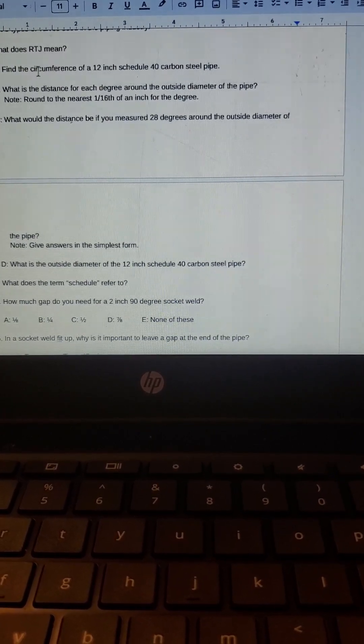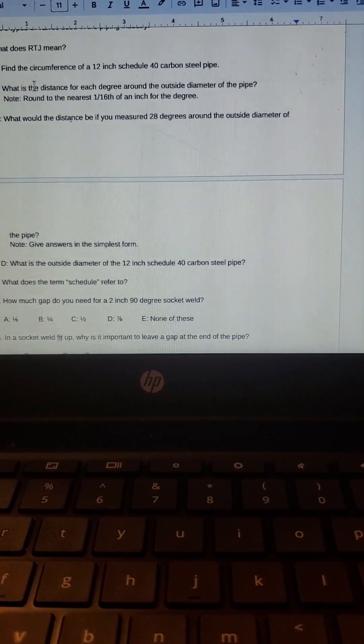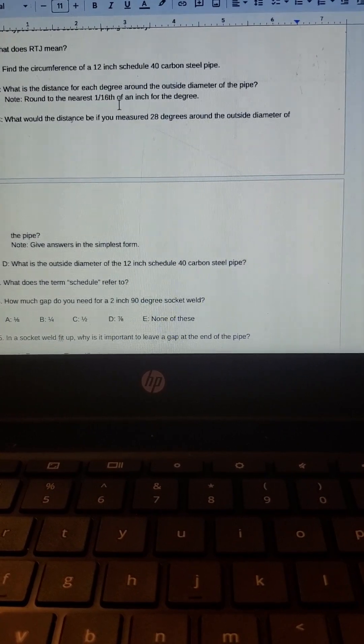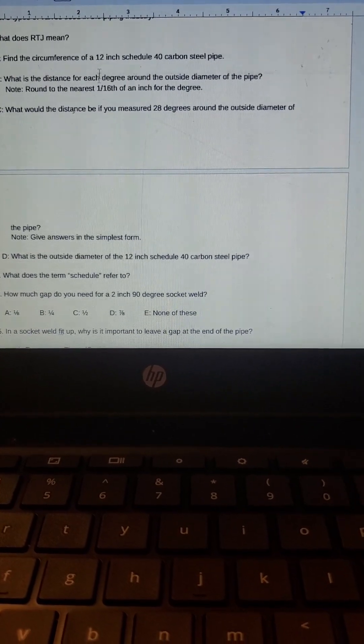What is the distance for each degree around the outside diameter of the pipe? So I'm guessing this is kind of asking us about the same piece of pipe, question A and B. And it says round to the nearest sixteenth of an inch for the degree. Let me do that.